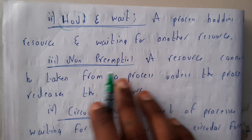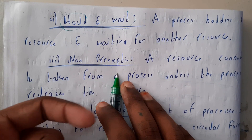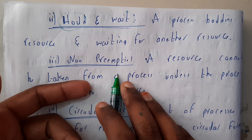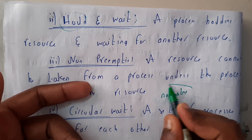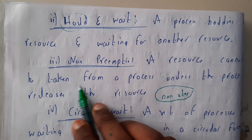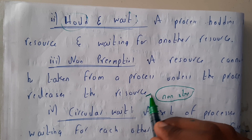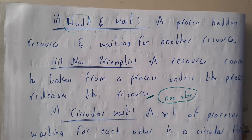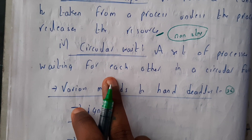The third reason is no preemption. Non-preemption means a resource cannot be taken from a process until the process releases the resource. If a process is not willing to release the resource, we cannot complete our own process, and that also leads to deadlock.